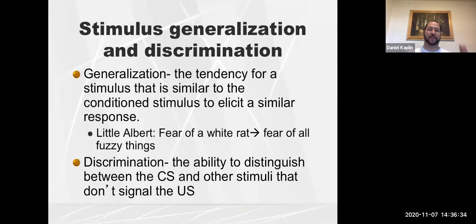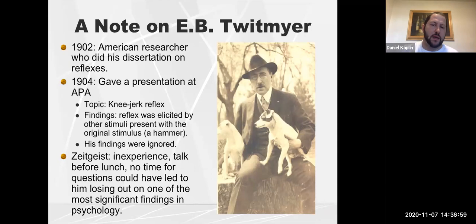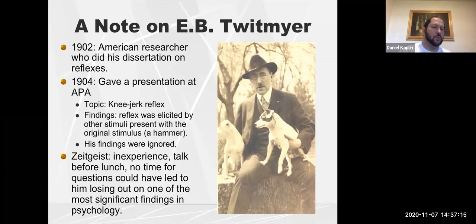Twitmyer was also studying reflexes, gave presentations at APA, and did his dissertation on reflexes — but his findings were largely ignored. The question is why Pavlov gets more credit. The answer is fairly simple: Twitmyer had less experience when he presented, presented before lunch, and didn't give people time to ask questions. Ultimately he didn't get the credit he deserved.